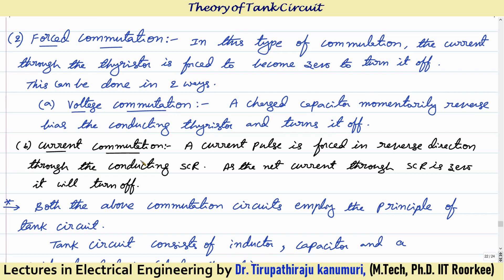The second technique is current commutation, where a current pulse is forced in the reverse direction through the conducting SCR. The amount of current forced in the reverse direction will be equal to the actual load current, so the net current through the SCR will be zero and it will turn off. Both these conditions are done artificially. Detailed analysis of these will be discussed in coming lectures.